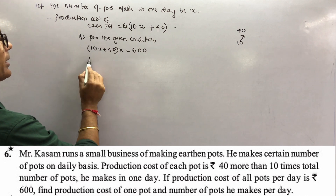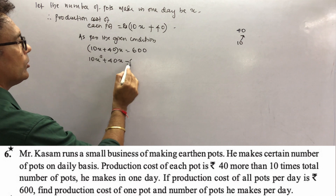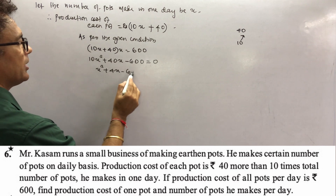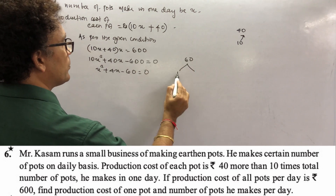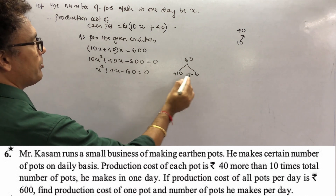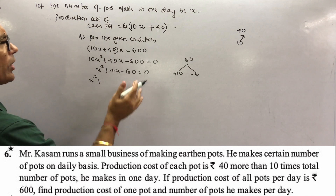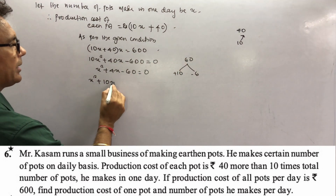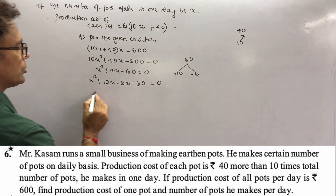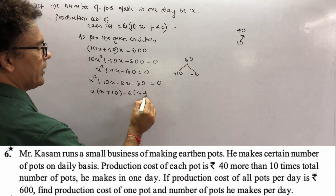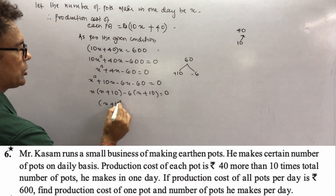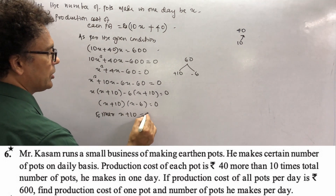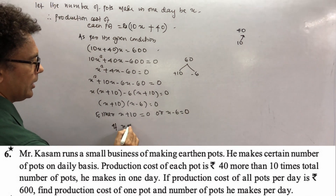Opening the brackets: 10x² + 40x = 600. Bringing 600 to the left: 10x² + 40x - 600 = 0. Dividing throughout by 10: x² + 4x - 60 = 0. Now factorize: 10 × 6 = 60 with +/- gives factors. We get x² + 10x - 6x - 60 = 0, so x(x + 10) - 6(x + 10) = 0, giving (x + 10)(x - 6) = 0.